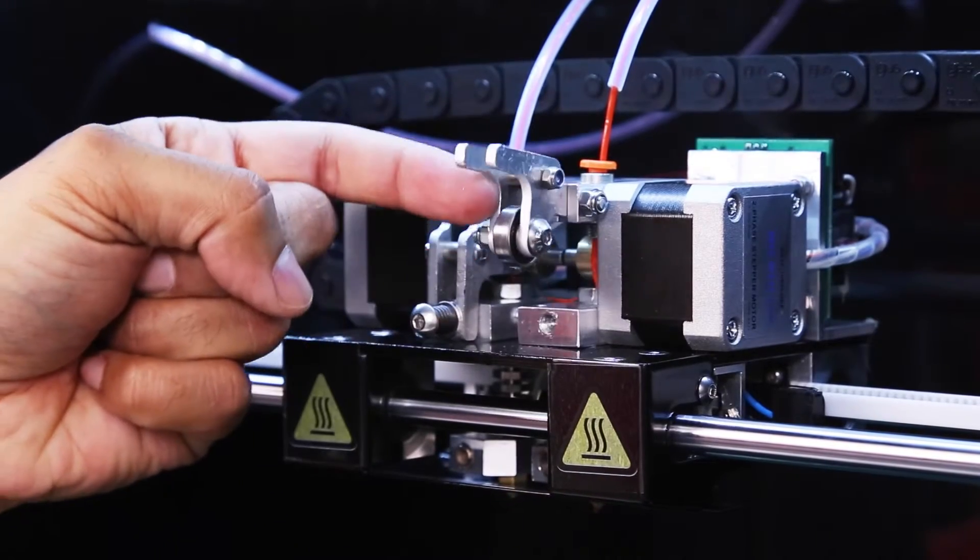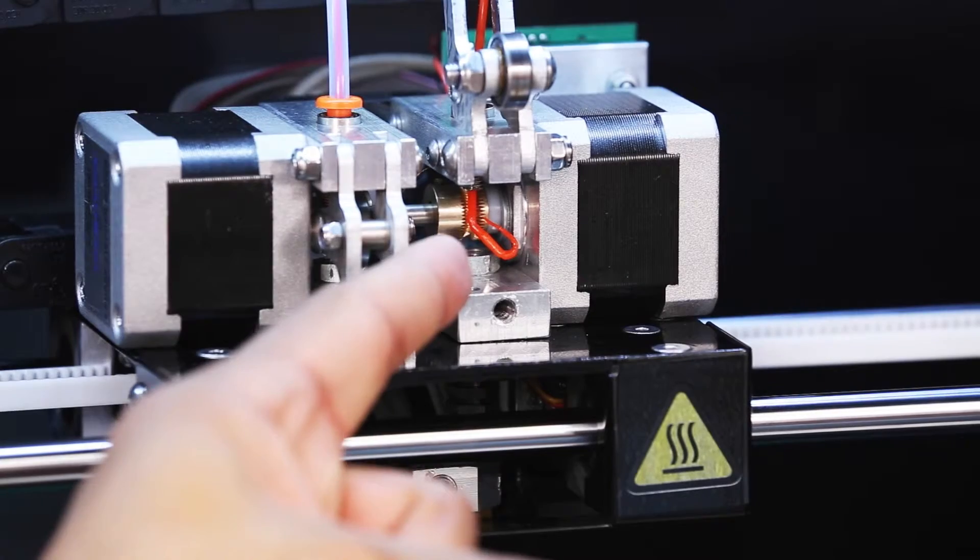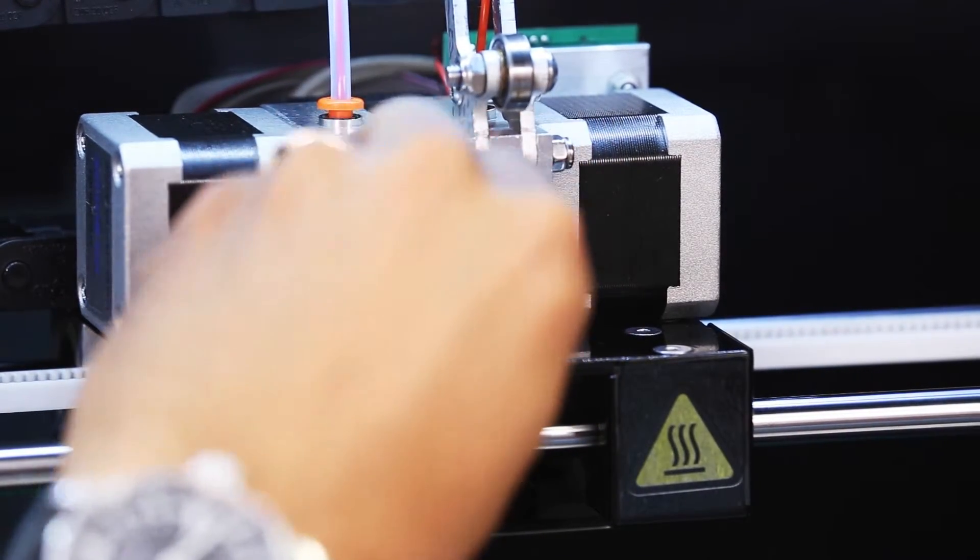Lift the tension shoulder upwards, giving you sight of and access to the blockage. Using the tweezers or pliers if necessary, remove any blockage.